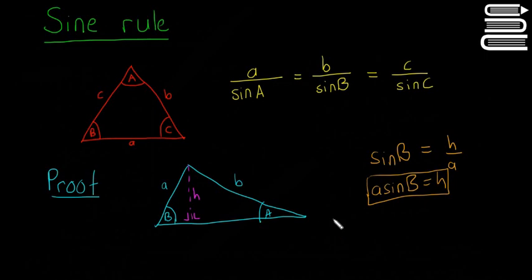So here we have sine of A is equal to h over b. And multiply both sides by b again, so it's going to be b·sin(A) = h. I'm just going to box that off and tidy up that h a little bit.